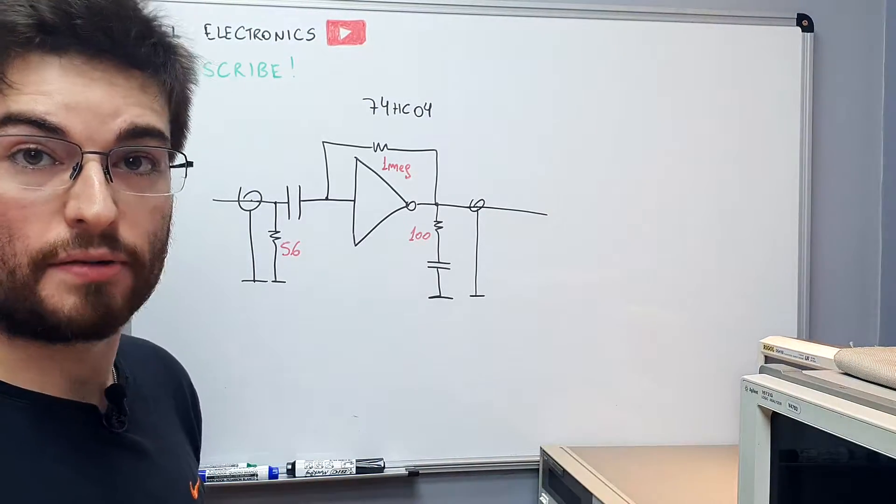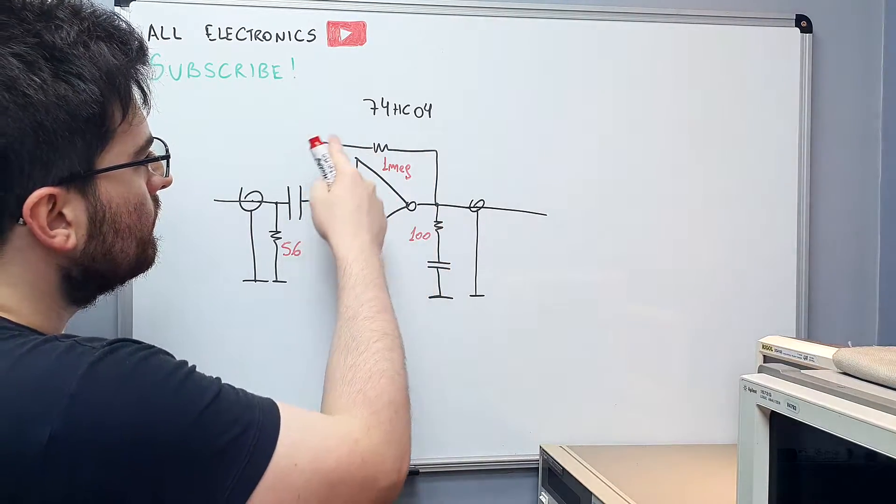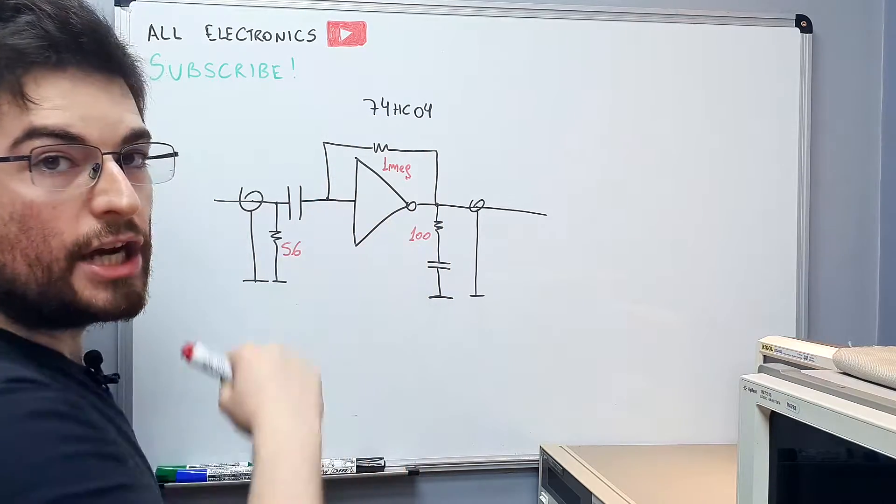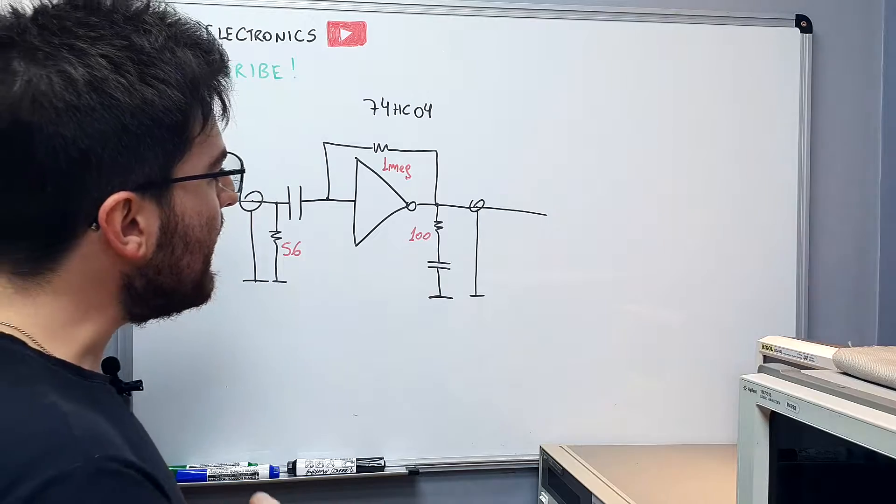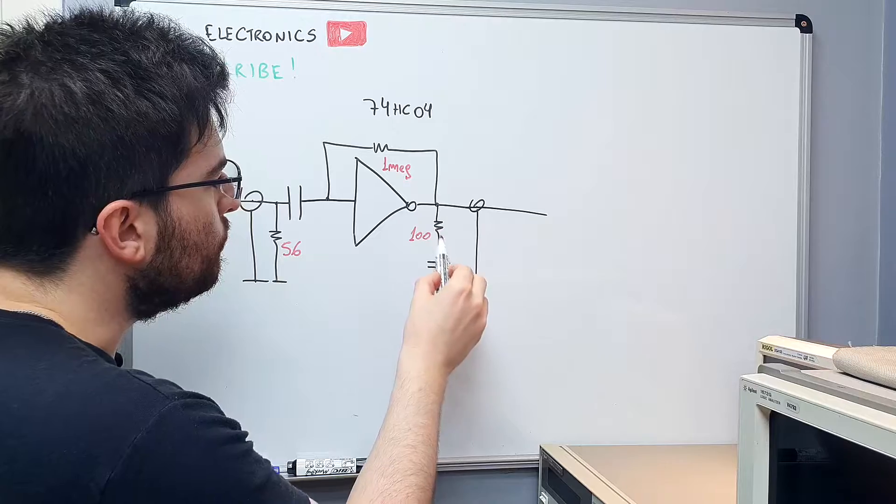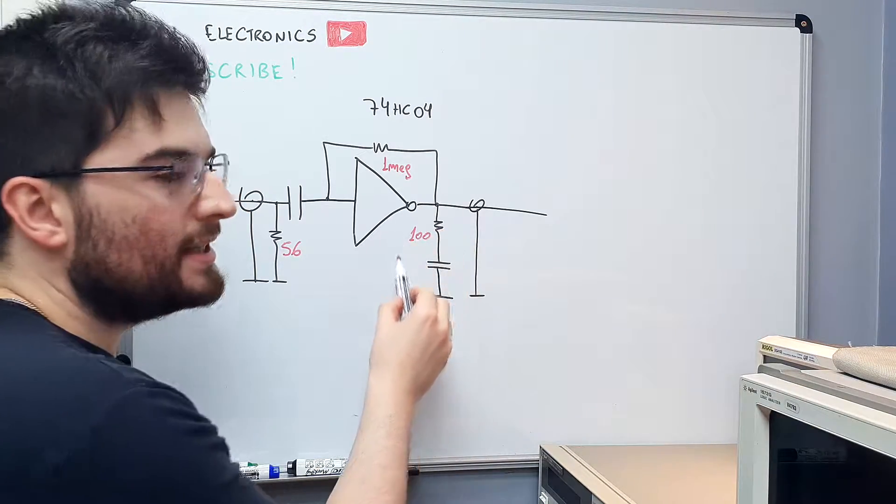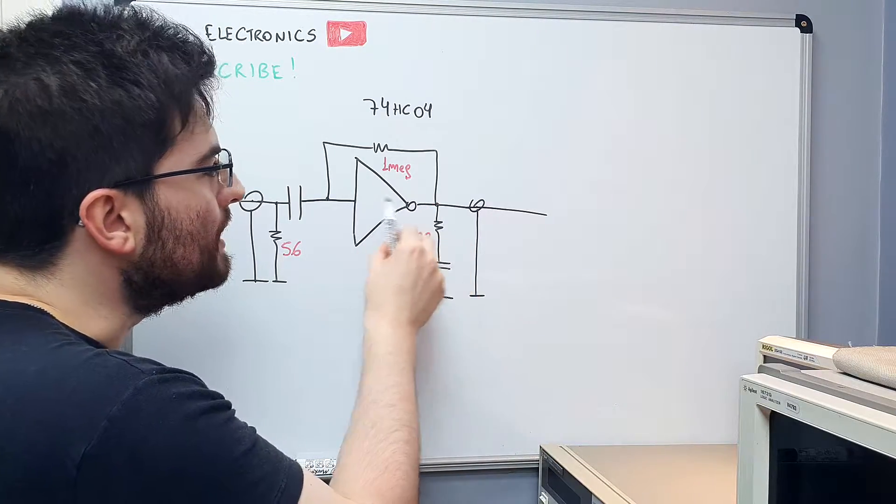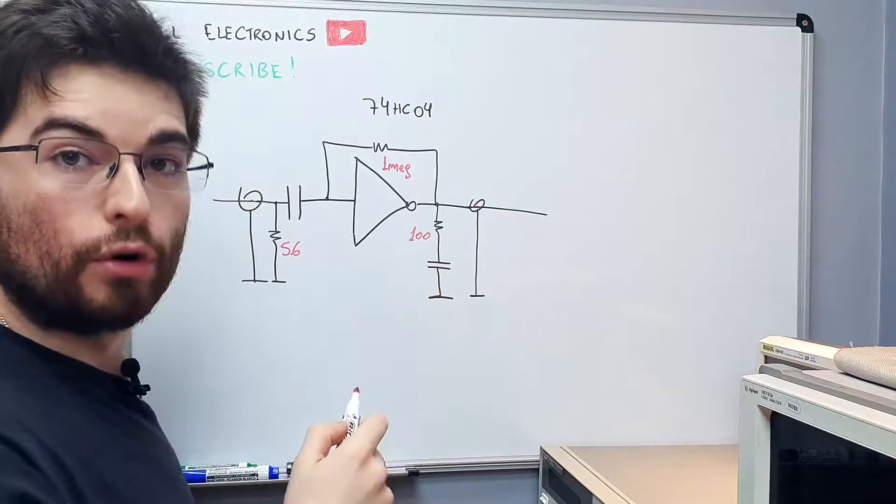This is the simplest arrangement that works in practice. We have the feedback that will ensure the DC biasing of the stage on the middle of VCC. We have an AC load here. We can see that this resistive load will be there only for AC signal. This is a trans-resistance device that will translate the output current pumped by the CMOS stage to a voltage, to an output voltage.